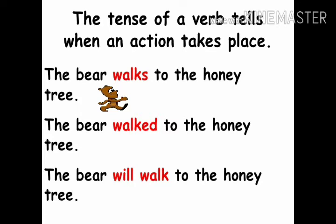First we will see the sentences. The bear walks to the honey tree. The bear walked to the honey tree. The bear will walk to the honey tree. In these sentences, walks, walked, and will walk are the verbs. We know that a verb is the action word. Did you know that a verb tells us when the action takes place — if it was in the present, past, or future?